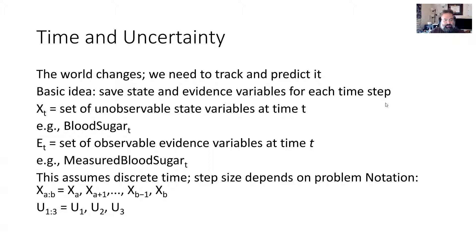E sub T is something you can actually observe — the evidence variable at time T. So you have an unobservable state X, the true thing you're interested in, and evidence E sub T that tells you what you think that state might be. For example, measured blood sugar should be an indication of your actual blood sugar at the same time T. This assumes discrete time steps, where the size of the step depends upon the problem.